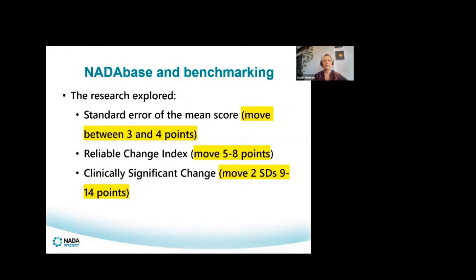When looking at the standard error of the mean score approach, it's probably the least stringent for assessing change — looking for movement of three to four points within a scale. You may be familiar with the K10, where you add up the scores and the higher the score, the higher the distress. For reliable change, there's a slightly more stringent cut-off — between five and eight points. For clinically significant change, it's around nine to fourteen points. So each approach tells us progressively more about what would be classed as specific change, up or down.